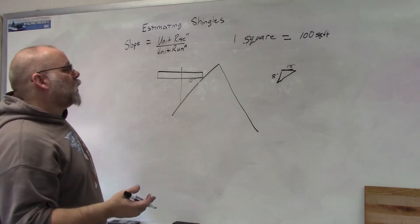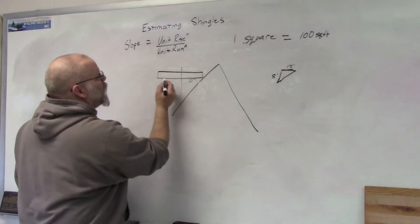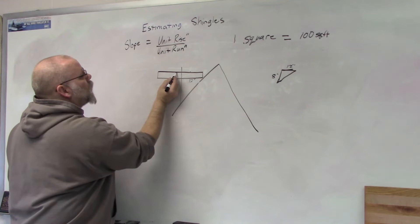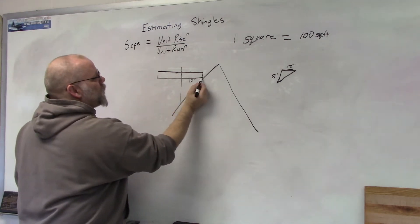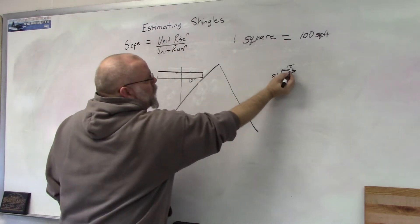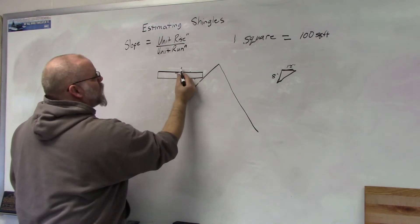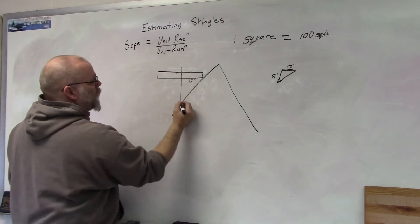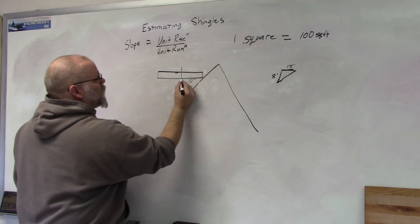Real simple. All you have to do is take a level with the bubble in it, measure from the end of your level over 12 inches because that's the unit run, and then take a string and hang it through that mark till it touches your roof.